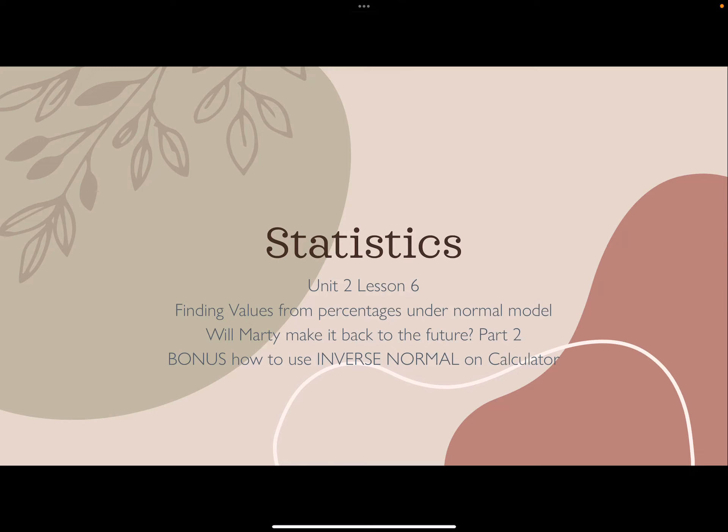This is Unit 2, Lesson 6: Finding Values from Percentages Under Normal Models. The lesson is called 'Will Marty Make it Back to the Future? Part 2.' We are going to be finding values with the z-score model, and as a bonus, I will also be showing you how to use the calculator competency, which is inverse normal.